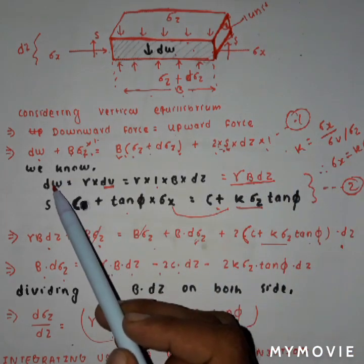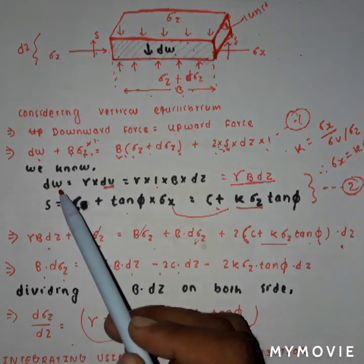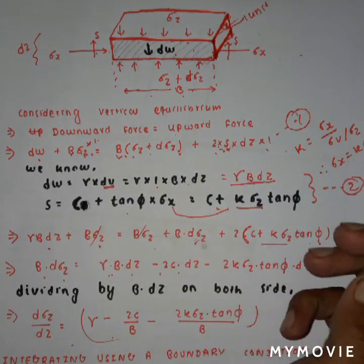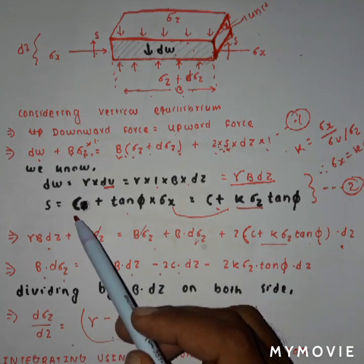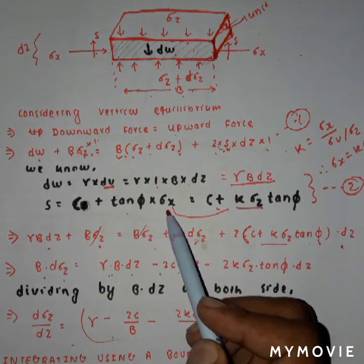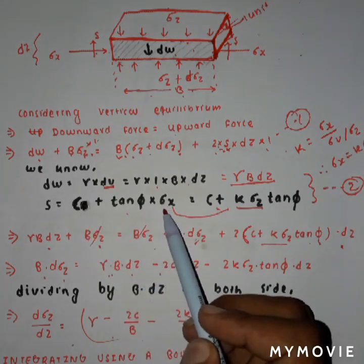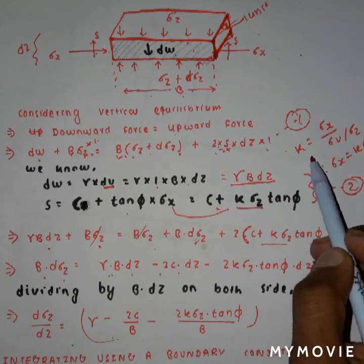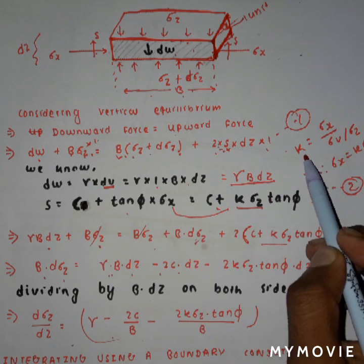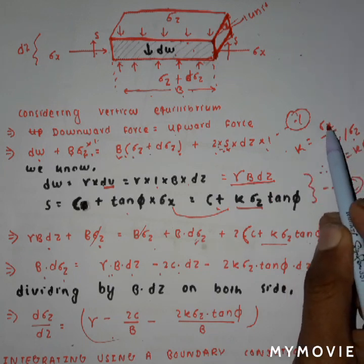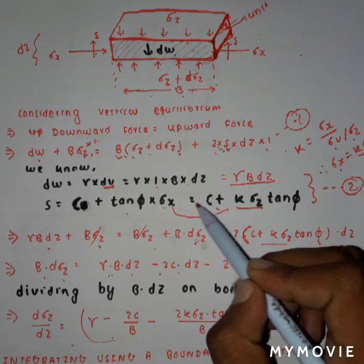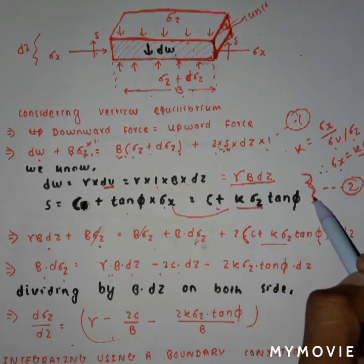The weight dw = γ × volume = γ × b × dz. The shear stress s = c + tan φ × σx, where c is cohesion and φ is the angle of internal friction. From the definition of the coefficient of lateral earth pressure, k = σx/σz, so σx = k × σz. Substituting, we get s = c + k × σz × tan φ.